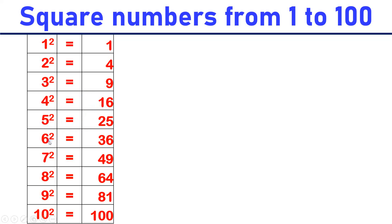6 square is equal to 36. 7 square is equal to 49. 8 square is equal to 64. 9 square is equal to 81. 10 square is equal to 100.